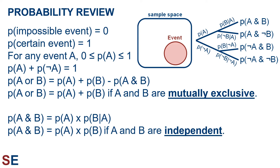The probability of A and B equals the probability of A times the probability of B given A. The probability of B given A is the probability of B under circumstances in which A has occurred. This simplifies into the probability of A and B equals the probability of A times the probability of B if the events A and B are independent — that is, whether A occurs or not, the probability of B would be the same.